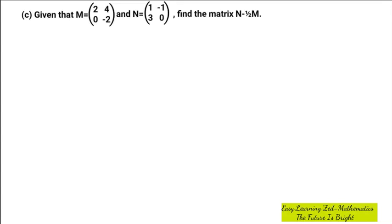Question 1c was as follows: given that m is equal to 2, 4, 0, negative 2, and n is equal to 1, negative 1, 3, 0, find the matrix n minus 1 over 2 m.